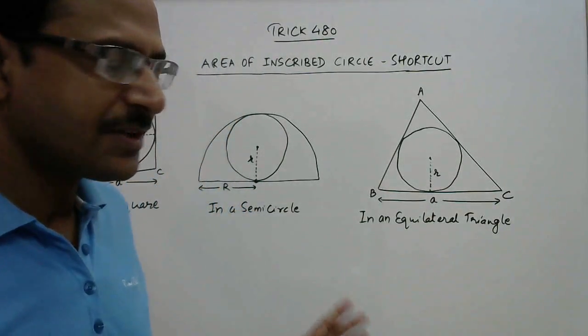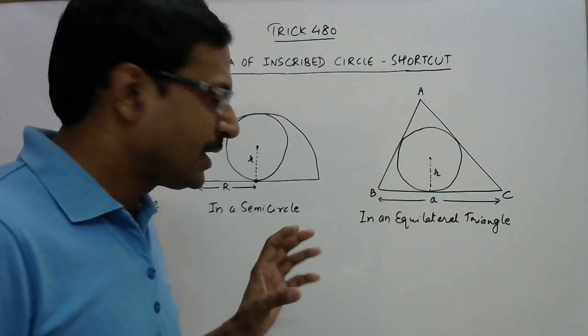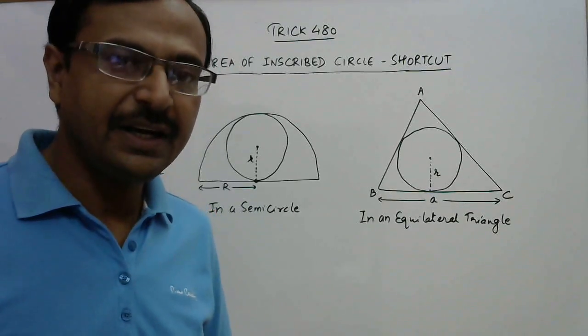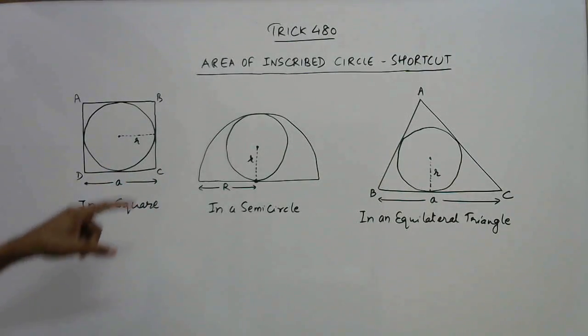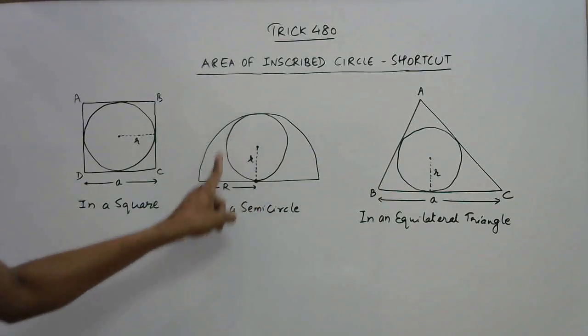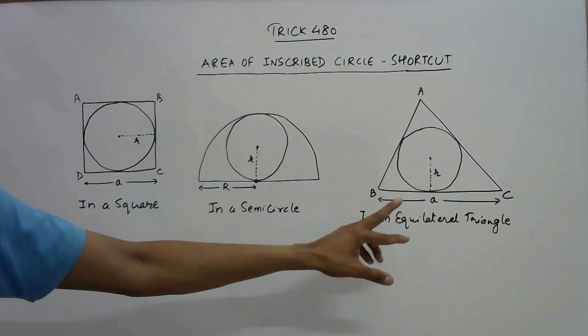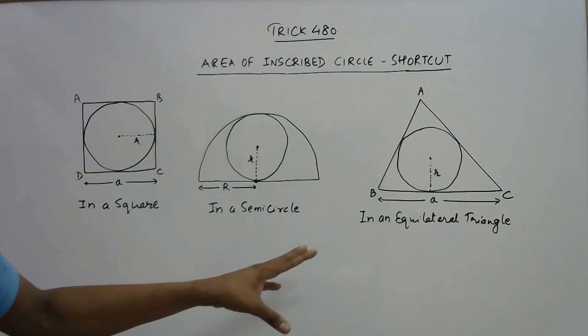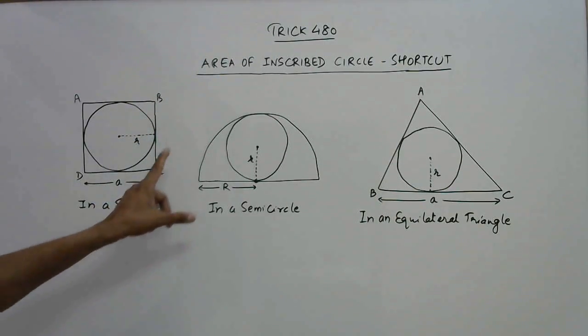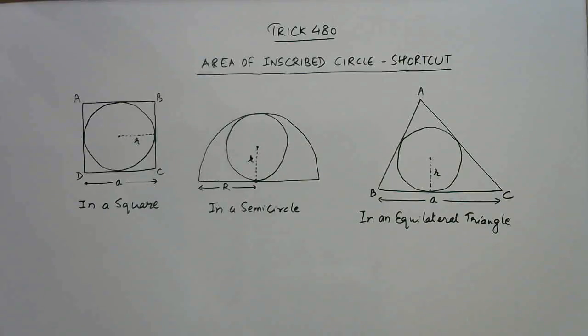Hello friends, in this trick I am going to take up a problem of geometry in which a circle is inscribed in different two-dimensional shapes. In this figure I have a circle inscribed in a square, in this figure the circle is inscribed in a semicircle, and in this figure it is inscribed in an equilateral triangle. So what happens to the radius of the inscribed circle and what happens to its area? Let us study the shortcut for finding the two variables.